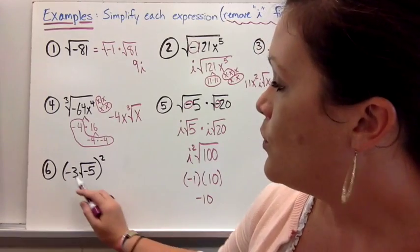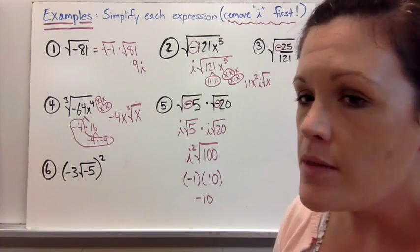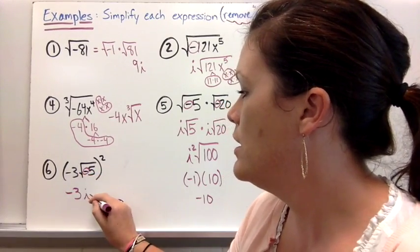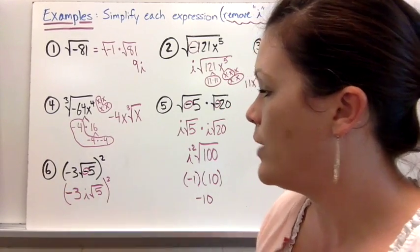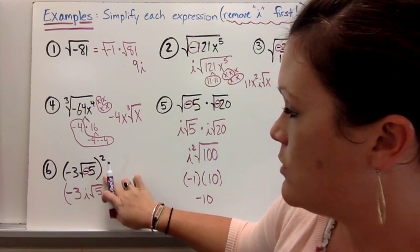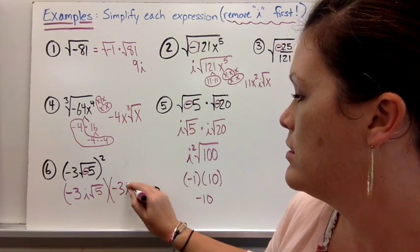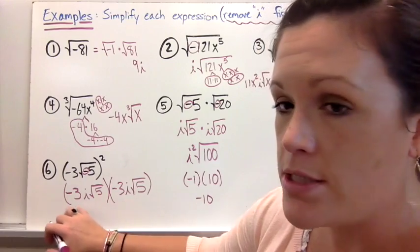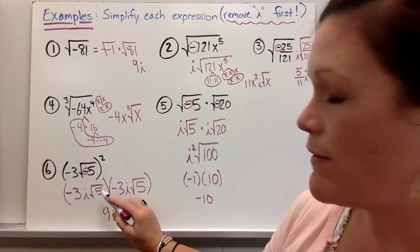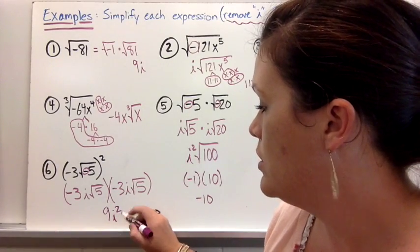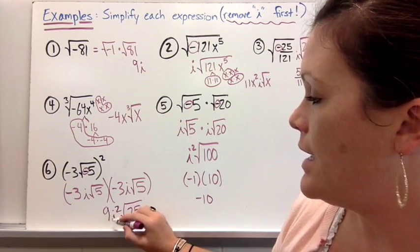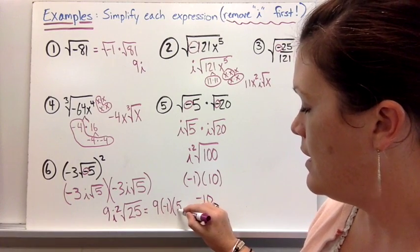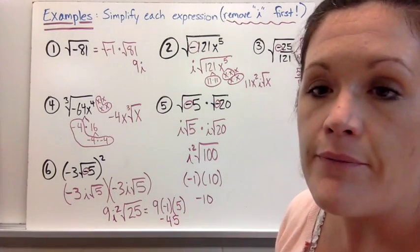We have negative 3 times the square root of negative 5, all squared. Again, take out your i first to make sure you get the right simplified solution — take out i and leave the square root of 5, and it's all still squared. Squaring means multiplying something by itself, so write it again: negative 3i√5 times negative 3i√5. Those multiply together to give 9i², and then √5 times √5 gives the square root of 25. 9i² becomes 9 times negative 1, and the square root of 25 is 5. So the answer is negative 45.